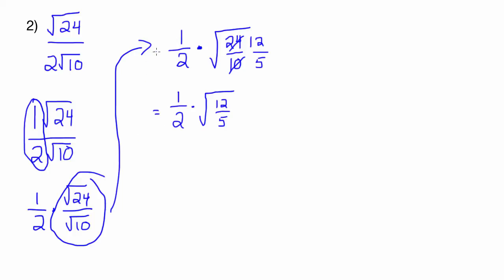And then we're going to change that to be √12 over √5. And then we're not allowed to have radicals in the denominator. So we're going to need to multiply by the √5 over the √5. And that will give us 1/2 times √60 over 5.